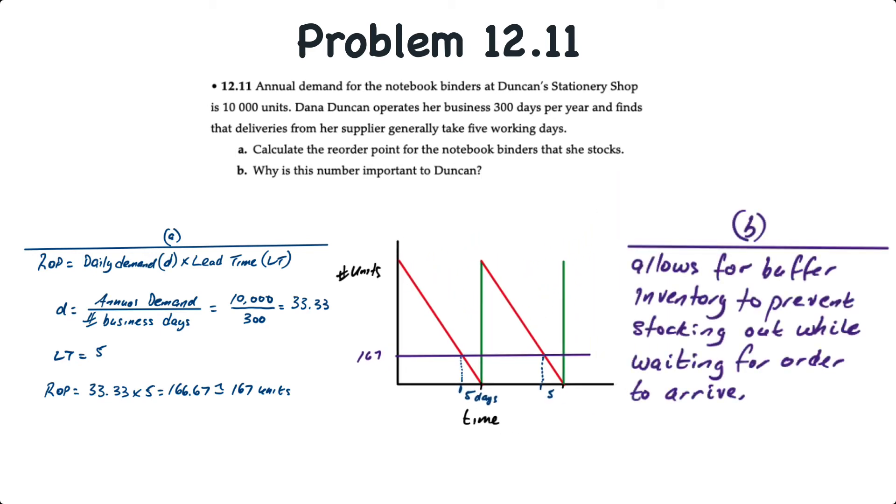For requirement B, why is that number important to Duncan? Well, it simply allows for the buffer of inventory to prevent stocking out while waiting for the order to arrive.